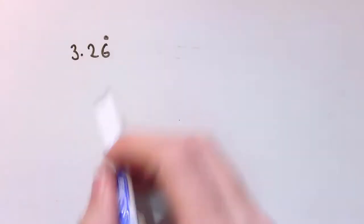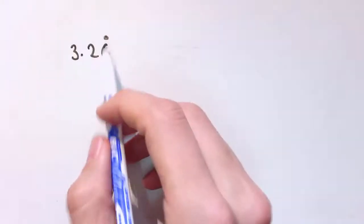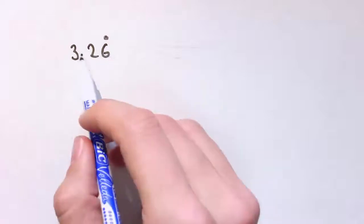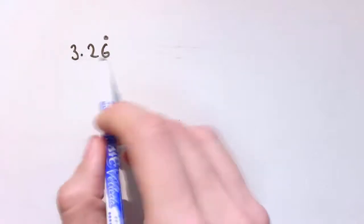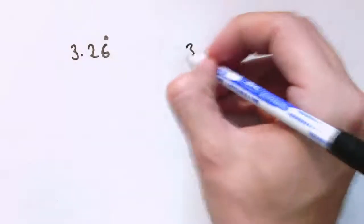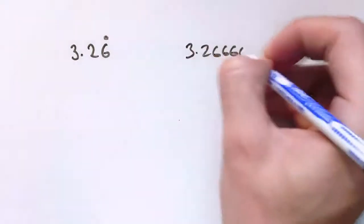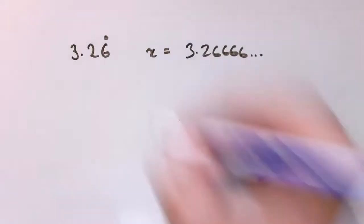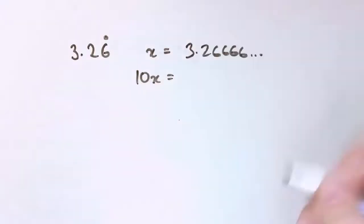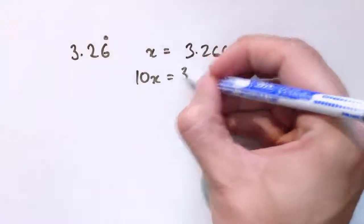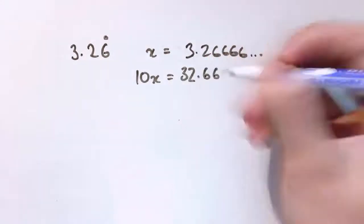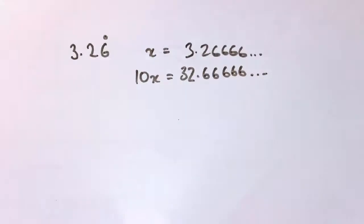What if it's got a recurring that's just over one number but it's got something before the recurring? Here 3.26 recurring, so this would be 3.2666... like this. So that's my x.